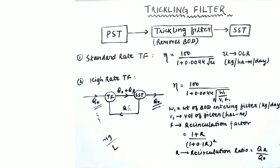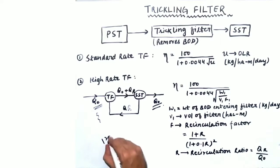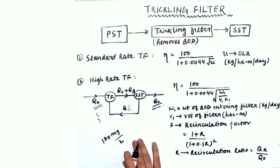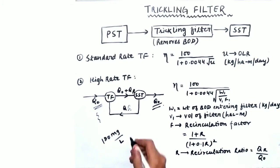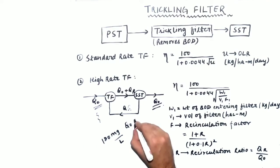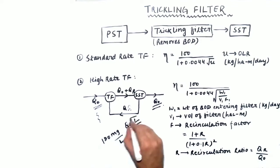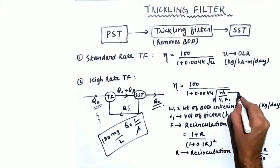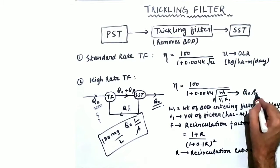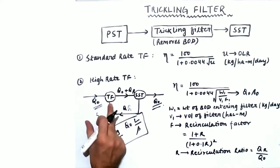W1 is calculated as Q0 multiplied by S0, where S0 is the BOD of the sewage entering the trickling filter in milligram per liter. The BOD concentration is always given in milligram per liter, and multiplying by the discharge Q0 gives the organic load W1 in kilogram per day. S0 is the BOD entering the trickling filter.